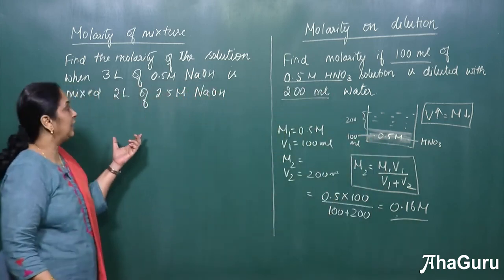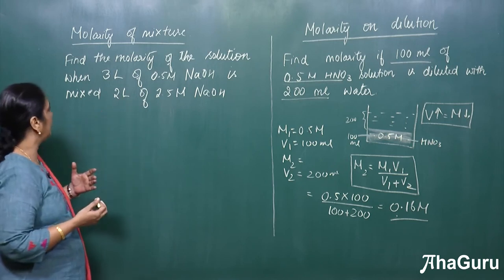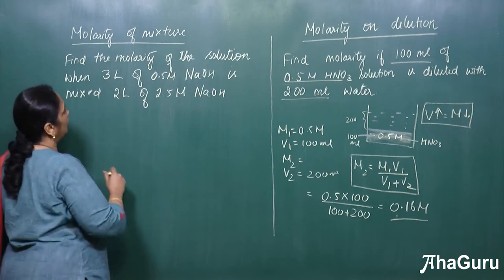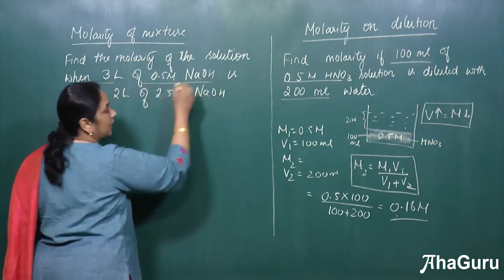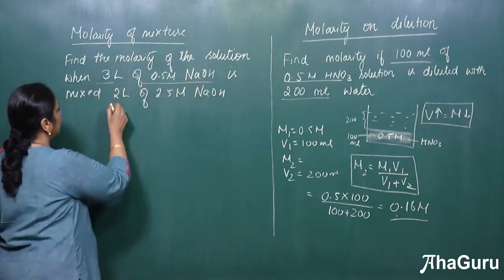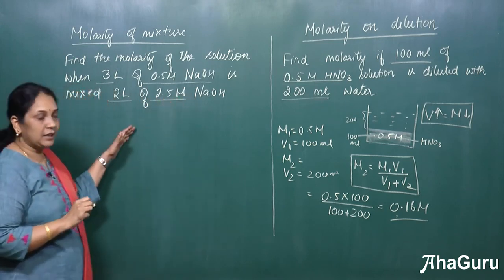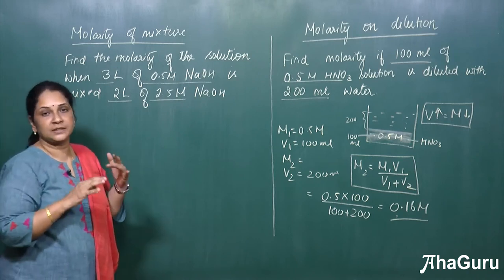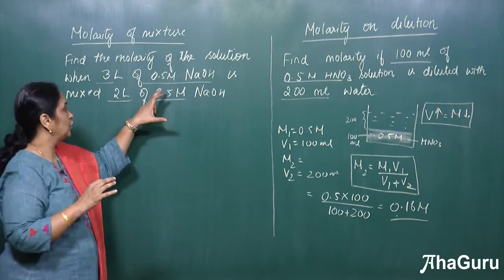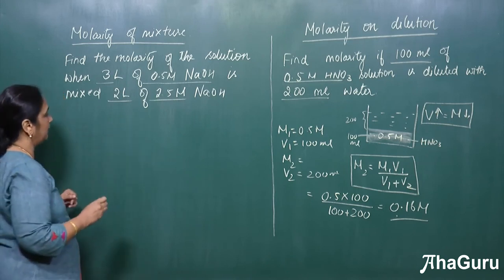Now let us see when we mix two base or acids. Here I have given a problem where we have to find the molarity of a solution when 3 liter of 0.5 M NaOH is mixed with 2 liter of 2.5 M NaOH. Now here please remember that we cannot mix an acid or a base. The same solution has to be used. Only then the formula what I am writing will be applicable.